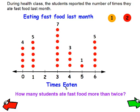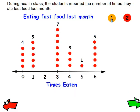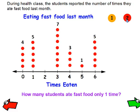So how many students ate fast food more than twice? Well, these people didn't eat fast food at all. These people ate once. Nobody ate twice, but all of these people ate fast food more than twice. And if you add 7 plus 3 plus 1 plus 5, you would have 15 students that ate fast food more than twice. How many students ate fast food only one time? These people ate fast food only one time, and there are 5 of them.